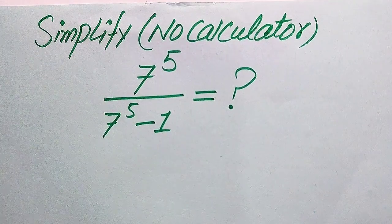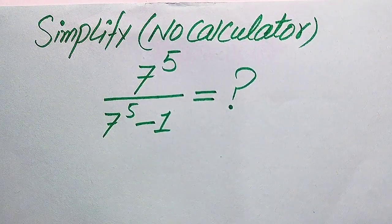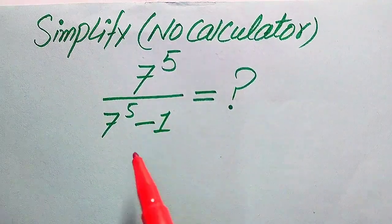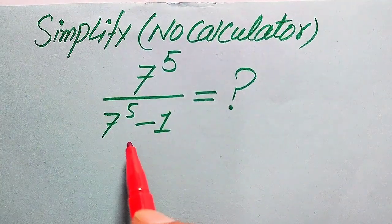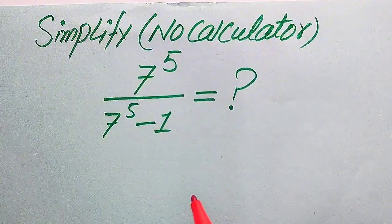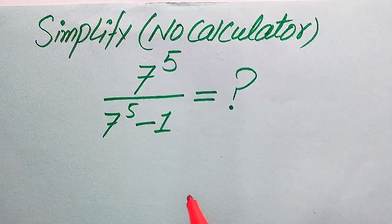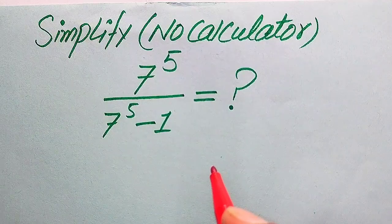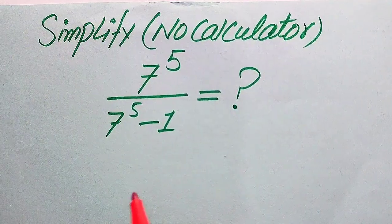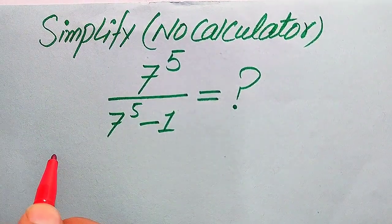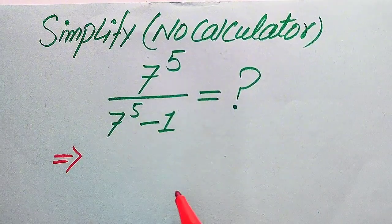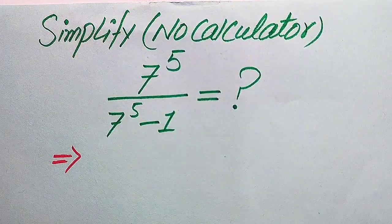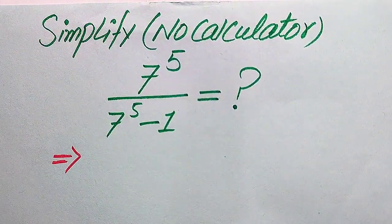Hello everyone. How to simplify this nice algebraic expression without using the calculator: 7 to the power of 5 divided by 7 to the power of 5 minus 1, written in simplified form. I hope you like this method, but if you have any other method in mind, please don't hesitate to write it in the comment section.